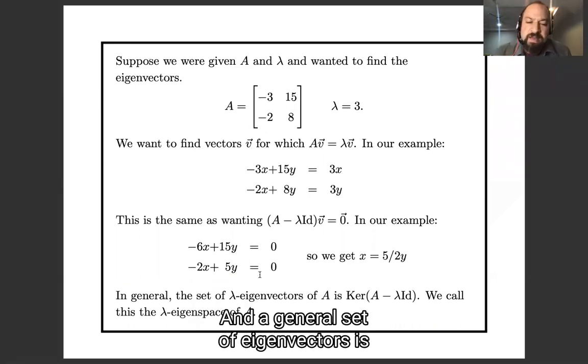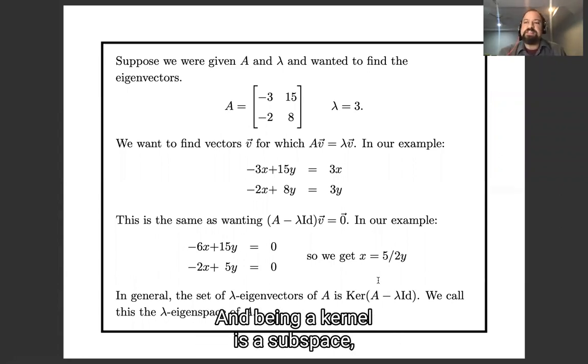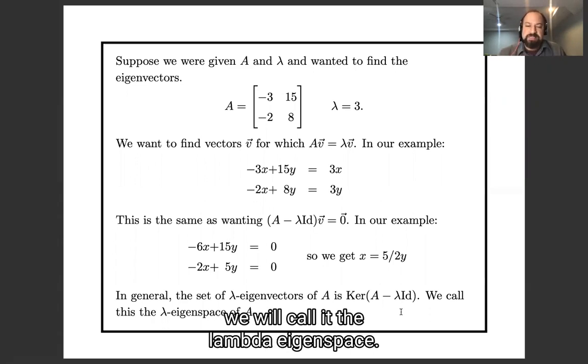And in general, the set of lambda eigenvectors is the kernel of A minus lambda identity. And being a kernel is a subspace, we will call it the lambda eigenspace.